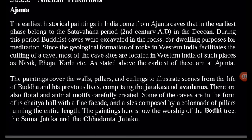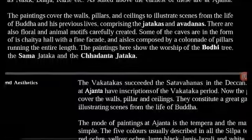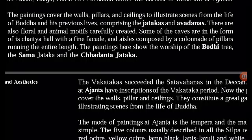The earliest of these are at Ajanta. The paintings cover the walls, pillars, and ceilings to illustrate scenes from the life of Buddha and his previous lives, comprising the Jatakas and Avadanas. There are also floral and animal motifs carefully created. Some of these caves are in the form of a Chaitya hall with a fine facade and an aisle composed by a colonnade of pillars running the entire length. The paintings here show the worship of the Bodhi tree, the Sama Jataka, and the Shadanta Jataka.